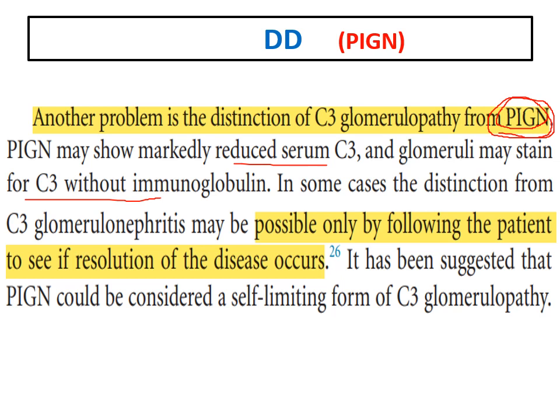Another diagnostic challenge is distinguishing C3 glomerulopathy from post-infectious glomerulonephritis. Post-infectious GN also has reduced C3, and glomeruli can stain for C3 without immunoglobulin. Both conditions have sub-epithelial humps. In some post-infectious cases, deposition can be mainly C3. Sometimes the only way to distinguish them is by following the patient — post-infectious GN is usually self-limited and resolves, whereas C3 glomerulopathy persists.